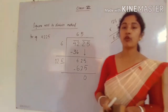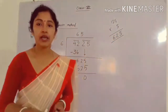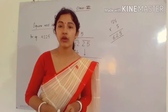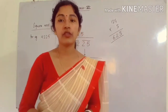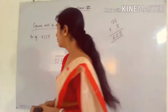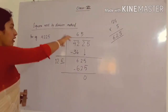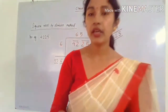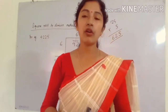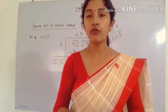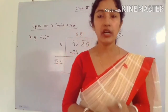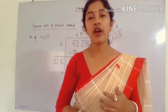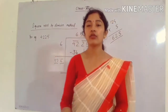So the square root of 4,225 is 65. This division method is applicable for a perfect square number and also for a non-perfect square number — if a number is not a perfect square, you can still find its square root using this method. Now come to the next topic: square root of a rational number. A rational number is in p/q form, where denominator is not equal to 0.